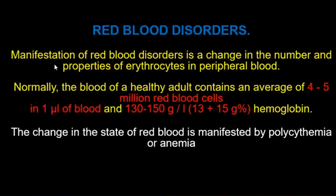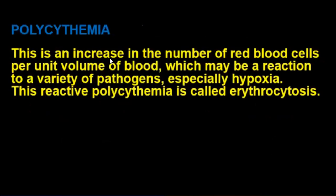Red blood cell disorders manifest as changes in number and properties of erythrocytes in peripheral blood. Normal: 5 million red blood cells per millimole/gram per liter, hemoglobin 130-150 gram per liter. Changes manifest as polycythemia or anemia. Polycythemia is an increase in the number of red blood cells per unit volume of blood, which may be a reaction to various pathogens — especially hypoxia. This reactive polycythemia is called erythrocytosis.